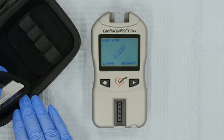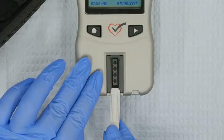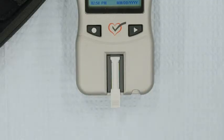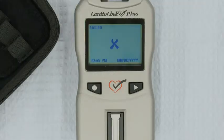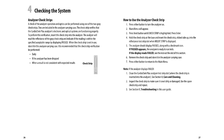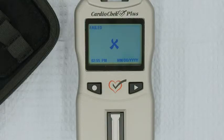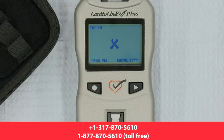When Insert Strip appears on the screen, insert the gray check strip, ribbed side up, into the reflectance test strip slot. Do not move the analyzer during testing. If the analyzer screen says passed, good news — you're ready to run controls. If the analyzer says failed, you'll want to make a few adjustments and try again. Please refer to Section 4 of your CardioCheck Plus Version 1.12 User Guide for details. If your check strip verification still fails after all troubleshooting measures have been taken, please do not use the analyzer. Call customer service for assistance.